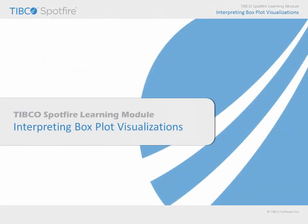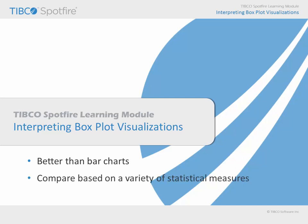In this learning module, we will consider the ways in which boxplots may be used to visualize data, including the simple fact that in many instances they are a far more robust solution for comparing quantitative measures which are grouped categorically than a similarly configured bar chart. This is because the boxplot visualization allows you to compare a variety of statistical measures for each category, and leverage post-hoc statistical tests in the form of comparison circles in order to aid you in drawing meaningful conclusions from your comparisons.